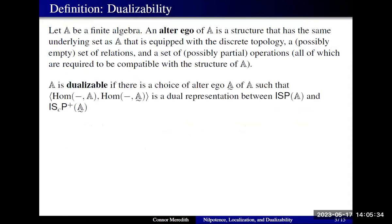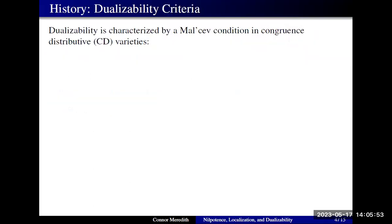We'll say an algebra is dualizable if there is a choice of alter ego such that we do actually get a dual representation like we see in Stone duality or Pontryagin duality. Dualizability is still a fairly mysterious property. We do have a characterization of dualizability in a rather limited setting — specifically in the setting of congruence distributive varieties — where dualizability can be determined by the presence or absence of a certain type of term operation.